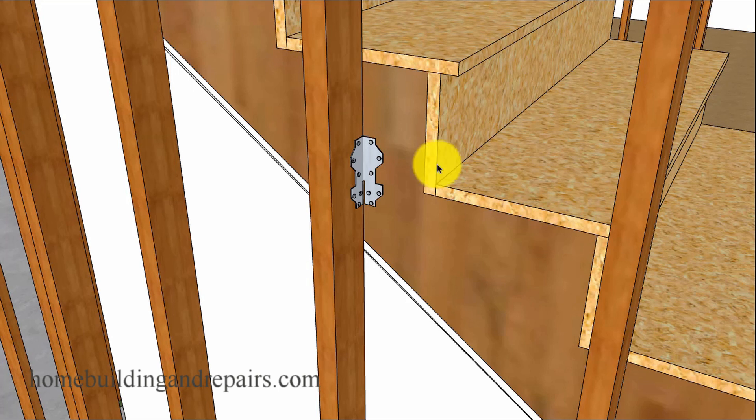First on the list would be what we have here when a stringer moves up and down up against a wall framing stud.